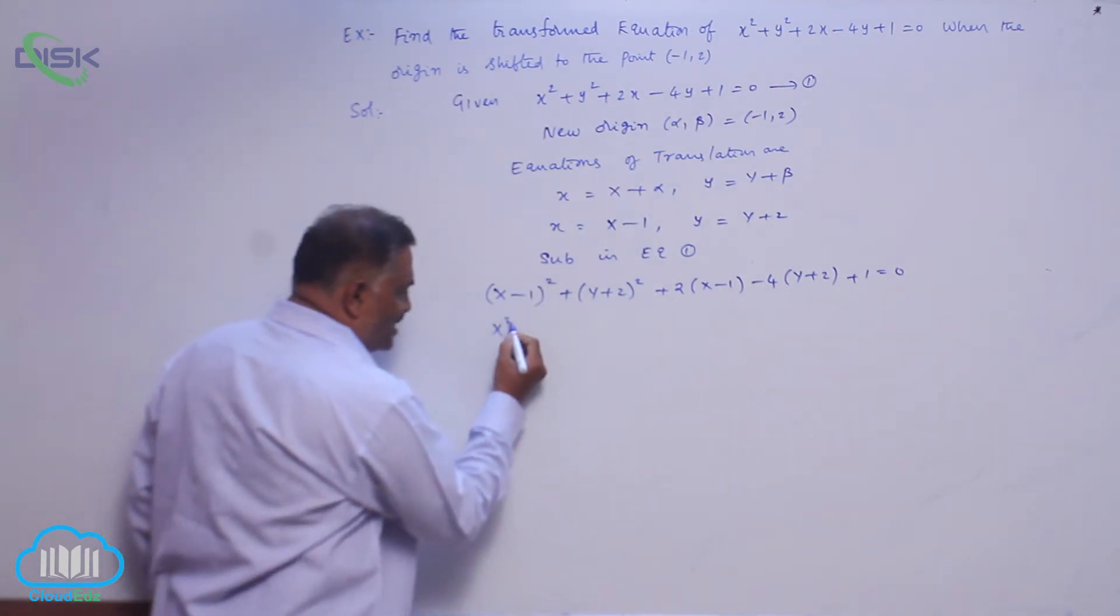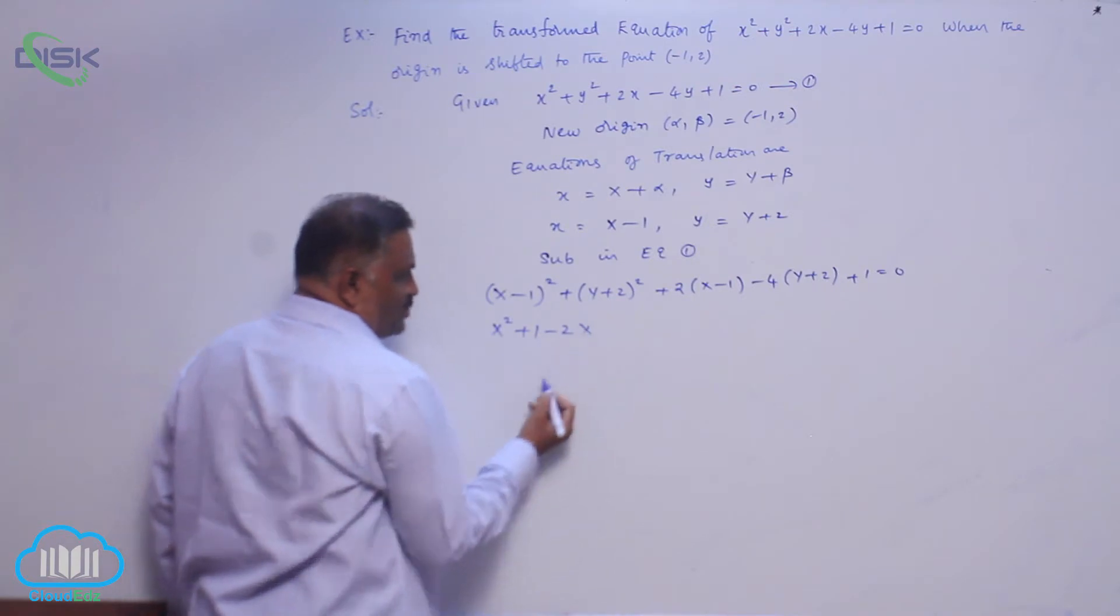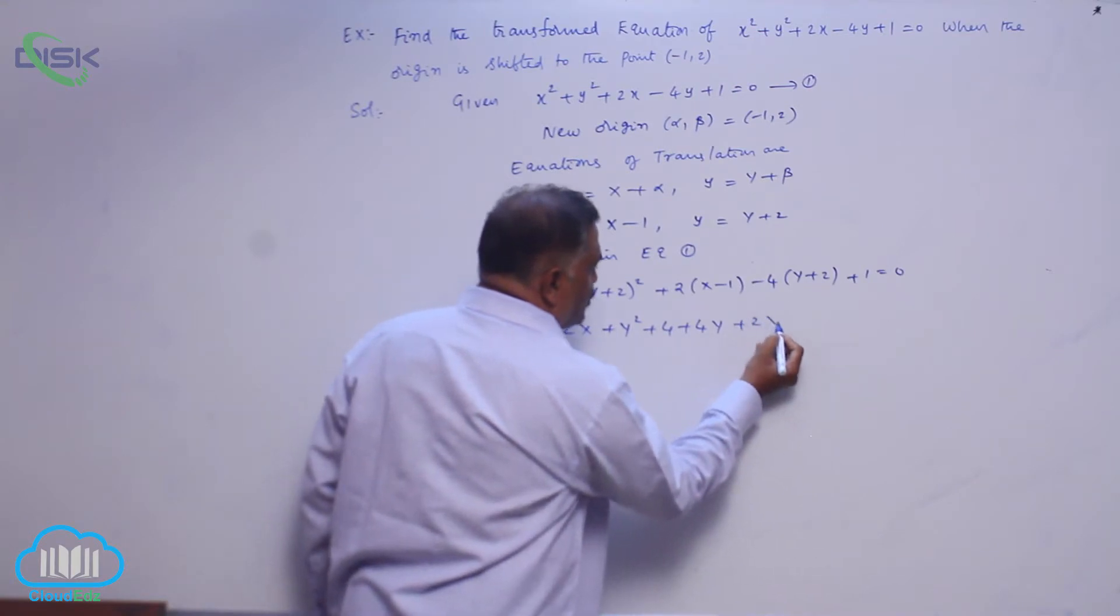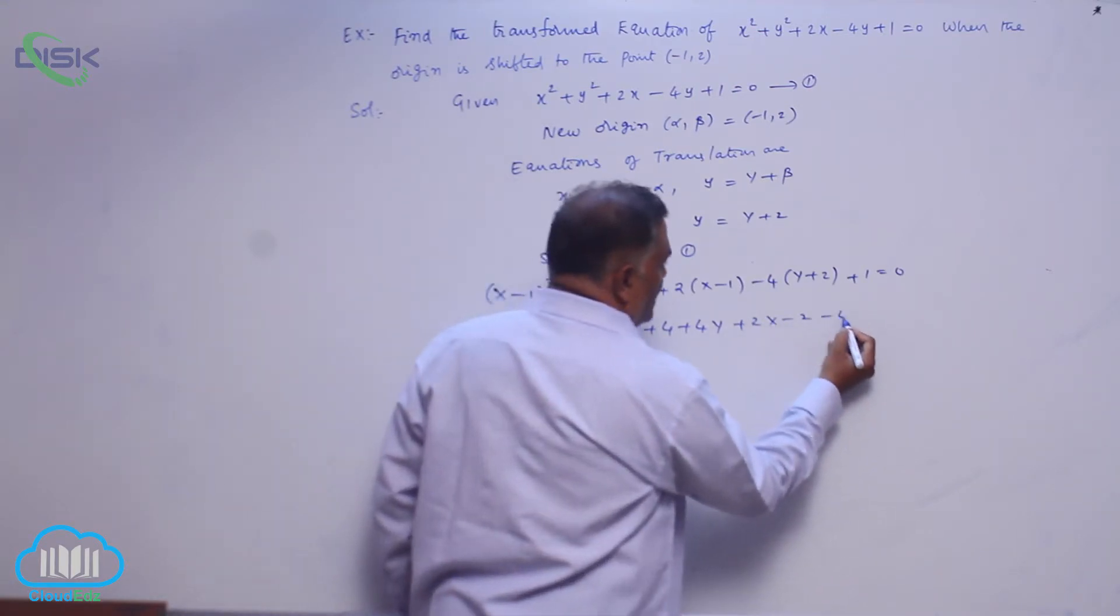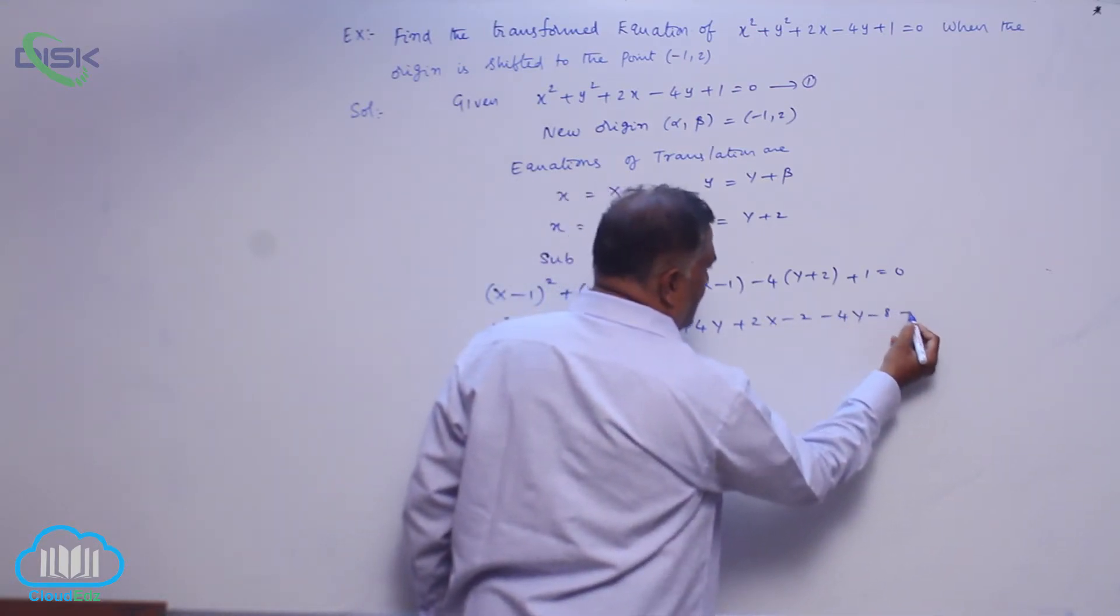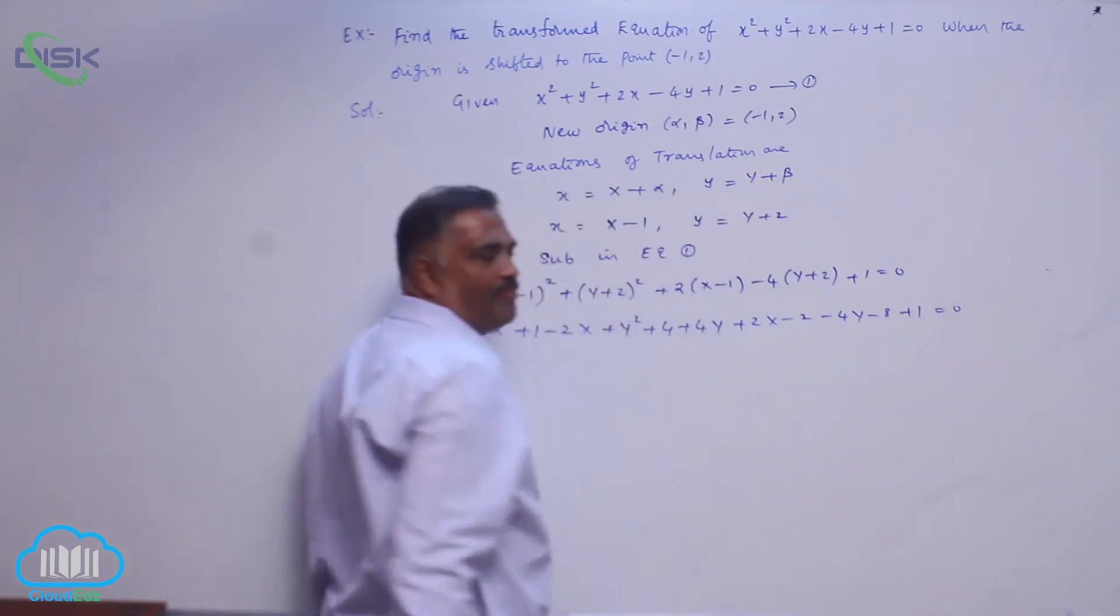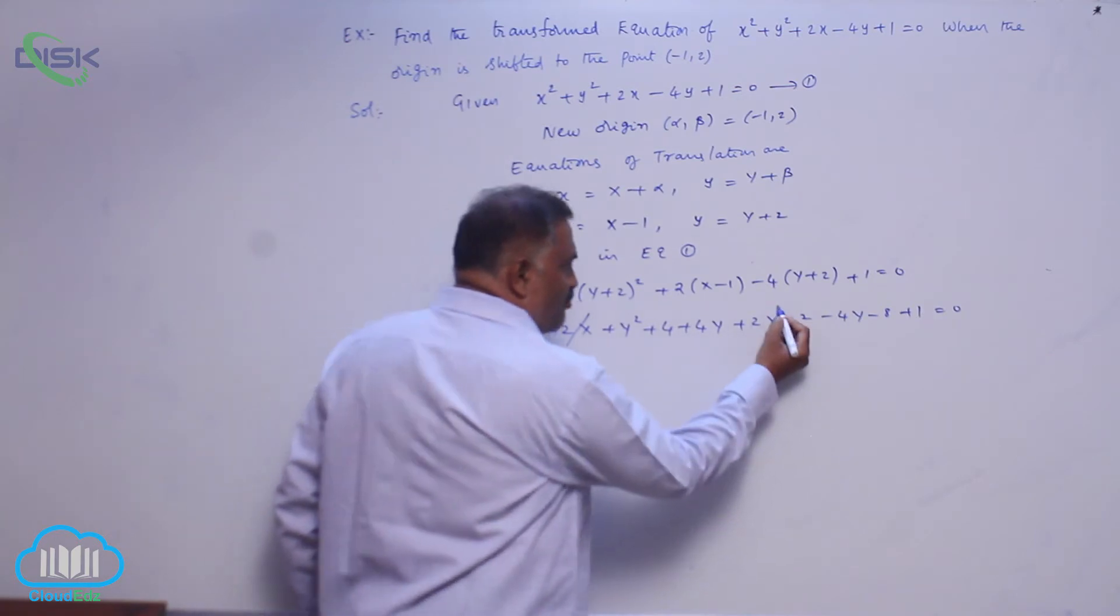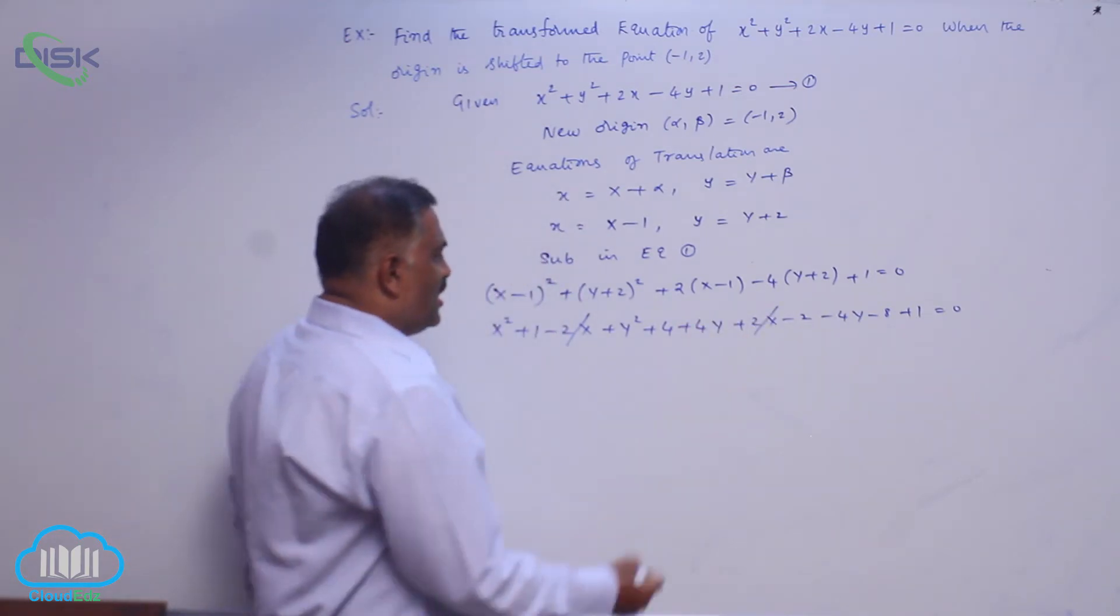Now we have to simplify. (a - b)²: X² + 1 - 2X, Y² + 4 + 4Y, plus 2X - 2 - 4Y - 8 + 1 = 0. Now you can check out very carefully: -2X + 2X + 2X gets cancelled, +4Y - 4Y gets cancelled.